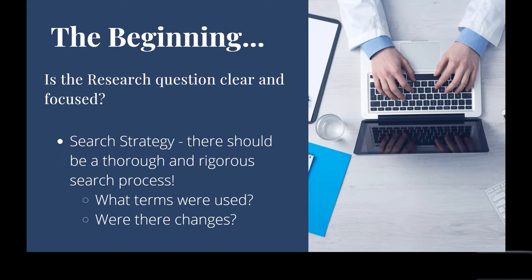One of the big areas to appraise with a systematic review is the search process. As a systematic review is bringing together so much information on one topic, we want to see that the search process to find this data has been thorough. Have a look if they included what terms they used for the search — there's no minimum or maximum on the number, but they should be appropriate terms to find the needed results. Do you think there are any terms which should have been included or taken out?